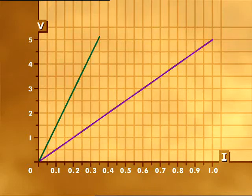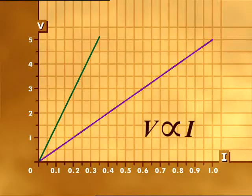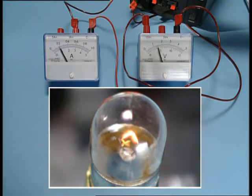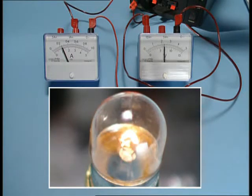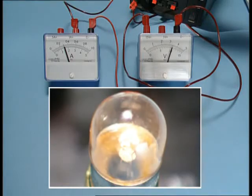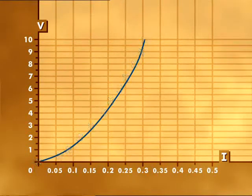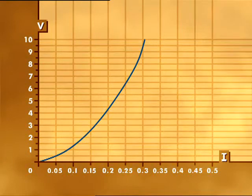If the graph of voltage against current is a straight line through the origin, the component is said to follow Ohm's law. Ohm's law states that at constant temperature, voltage and current are directly proportional. But not all components follow Ohm's law. Look at what happens to the current through a bulb when voltage is varied — the graph is not a straight line. As current increases, the graph gets steeper, meaning the resistance of the bulb is increasing. Voltage and current are not proportional, so the bulb does not obey Ohm's law. It's called a non-ohmic component.